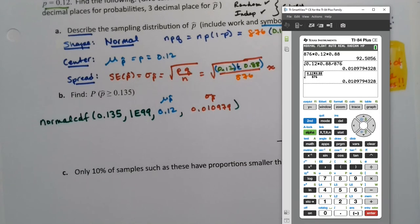Let's grab our calculators because that's what I just wrote up was the calculator. So second distribution, normal CDF, 0.135. Oh this is convenient, I already had 1e99 sitting in there. Remember, it's second comma to get that e. And then it's 0.12 here and 0.010979. And then I'll go down to paste, press enter on the paste, and press enter again to run it, and it tells me it's 0.0859.